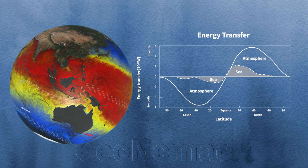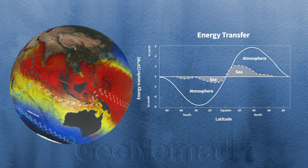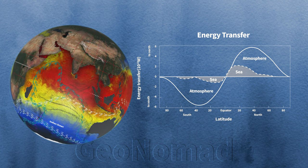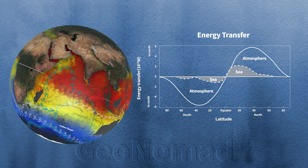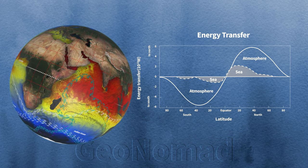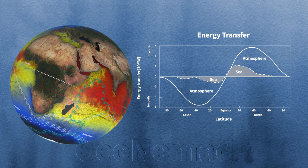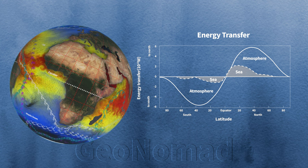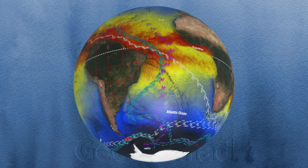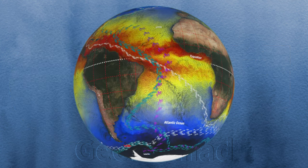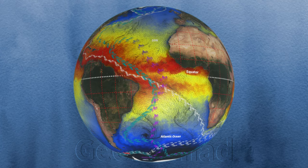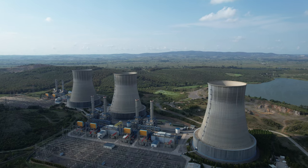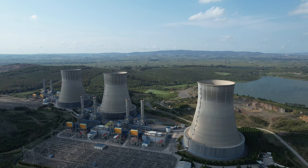Looking at a graph of energy movement in the north-south direction by latitude, the dark part shows the amount of movement carried by the sea. In the high-latitude regions of the North Atlantic, where energy transfer is large, the Gulf Stream carries energy northward from the ocean's surface layer, while deep water transports energy southward. The energy transport of the Gulf Stream is enormous, as surface waters that have crossed the equator are heated into warm water. The amount of energy the Gulf Stream carries is equal to all 27,000 power plants in the UK.